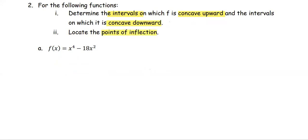Recall that to determine the interval of concave upwards or downwards, we determine the sign of the second derivative. If the second derivative is greater than 0, it is concave upwards. If the second derivative is less than 0, it is concave downwards. The point of inflection is where the sign switches from positive to negative or negative to positive of the second derivative.